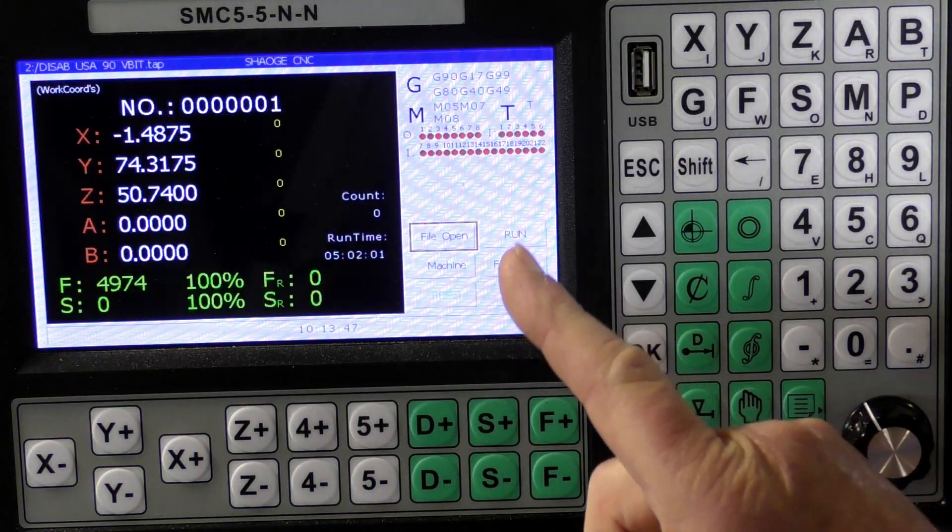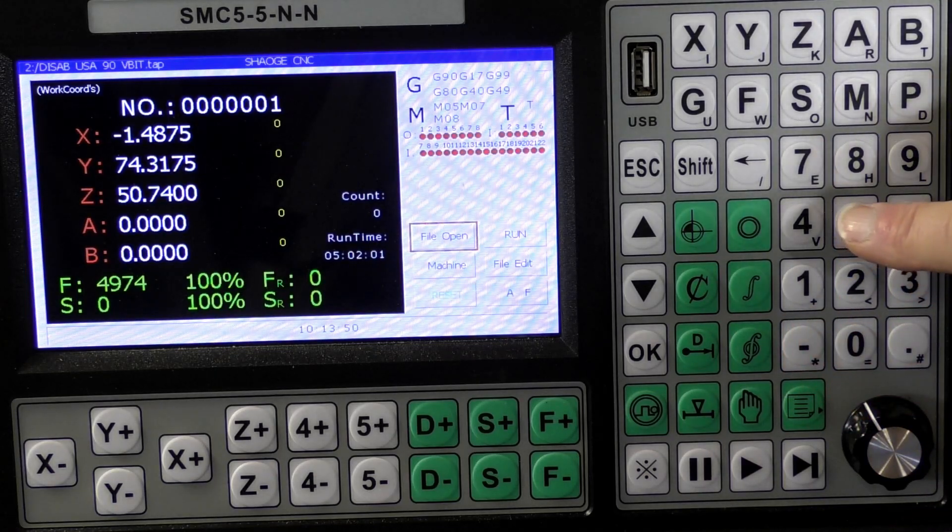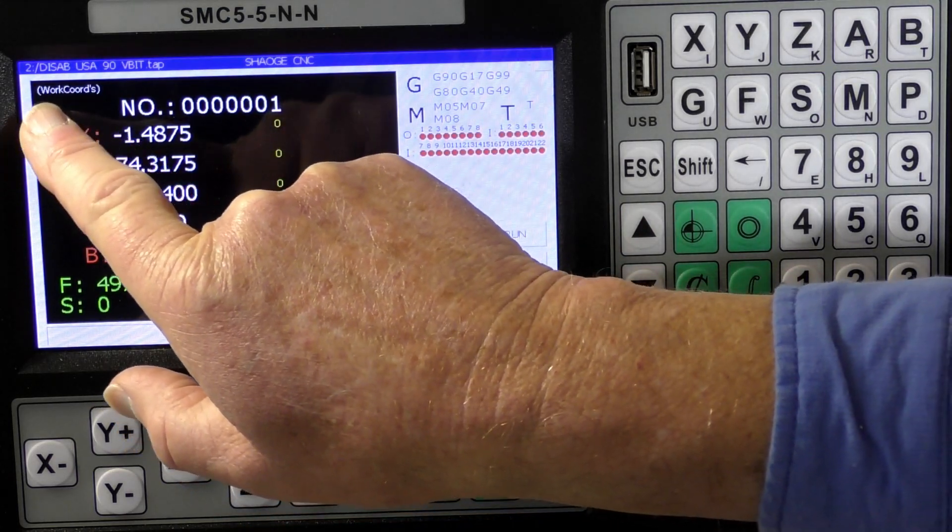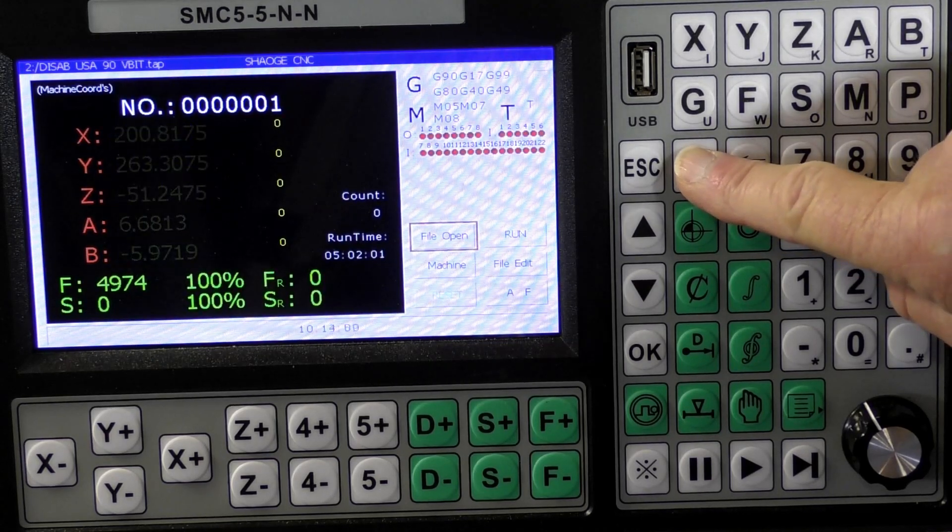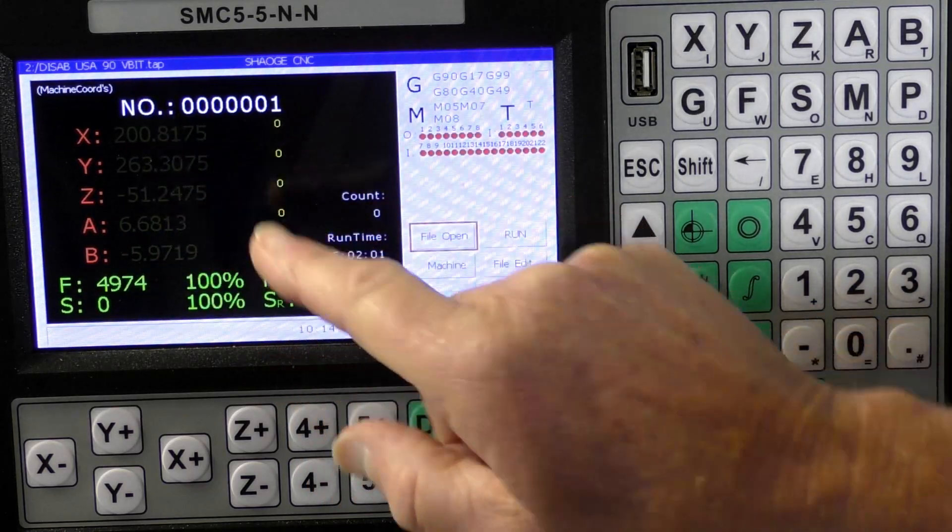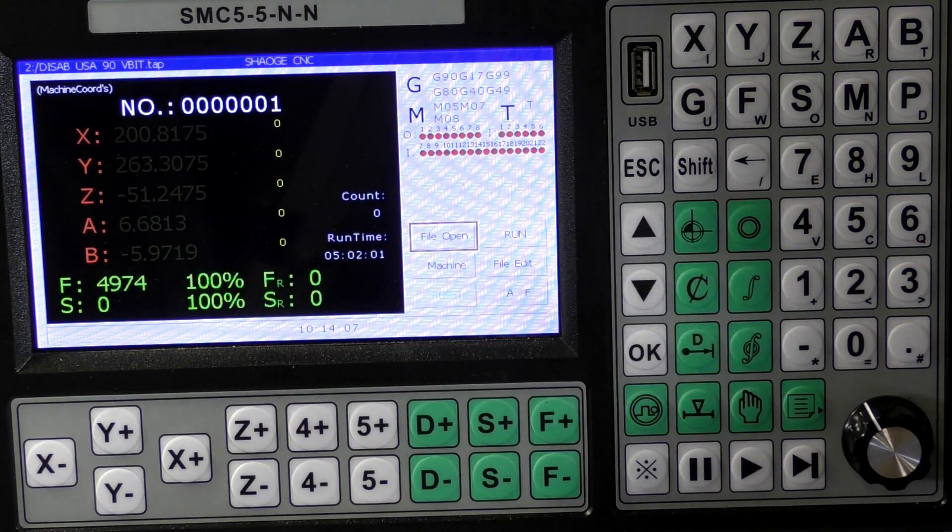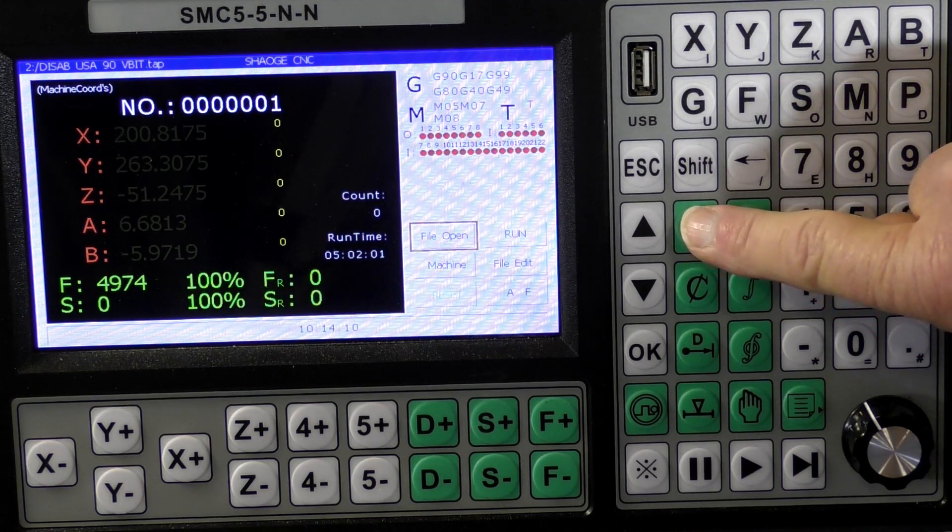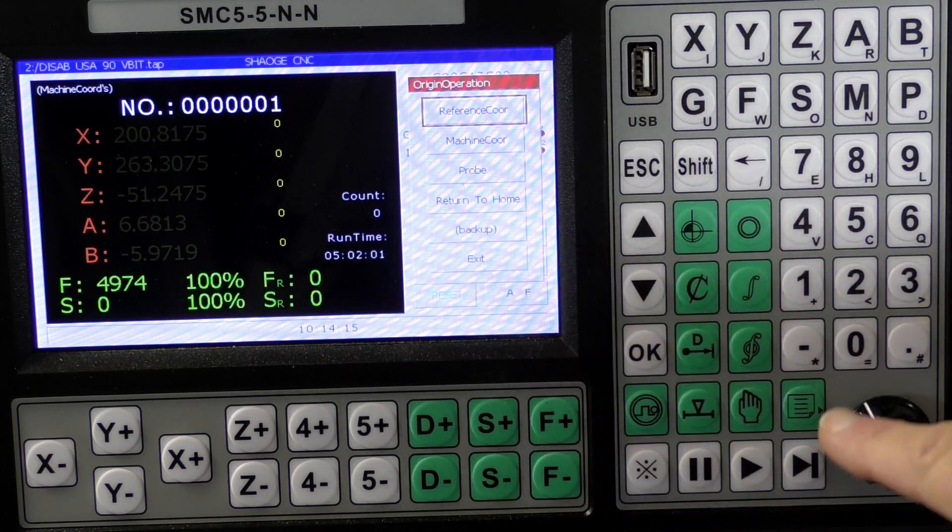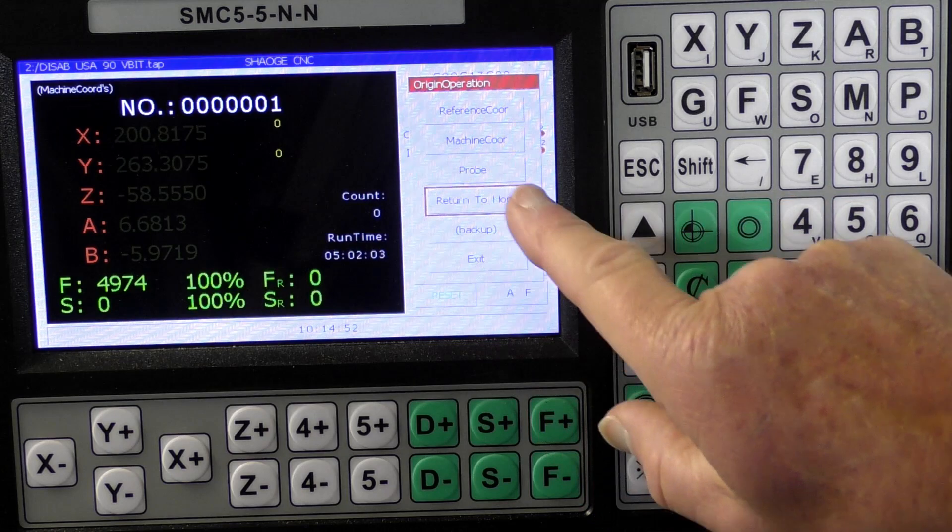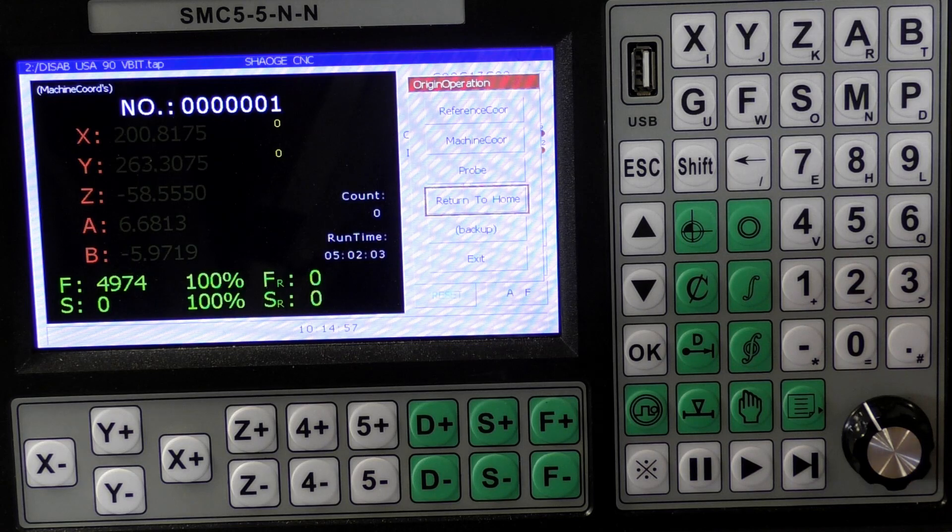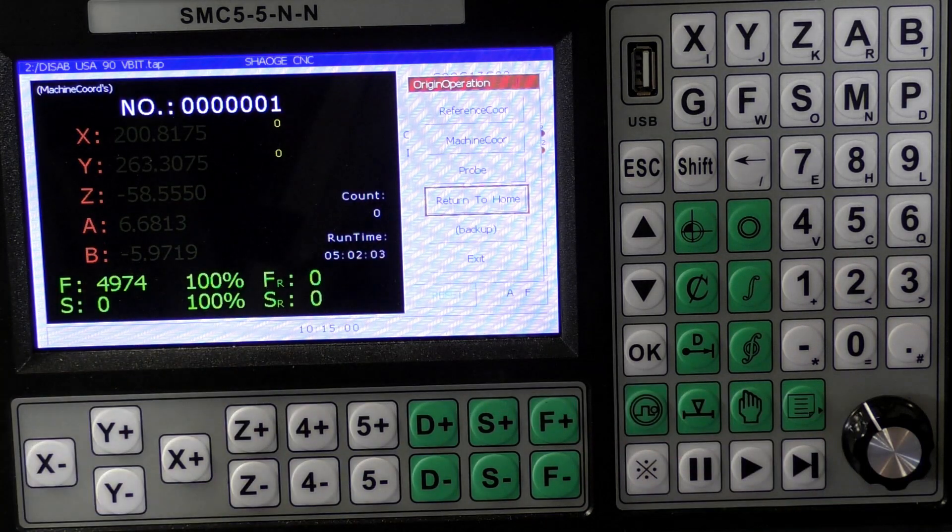First things first, you can see this reset flashing. Nothing will move at all until we take that off. To take that off, you come to this X with some dots, press that and it goes green. That means now this is live and talking to the little CNC router. The first thing we're going to do is home the machine. To do that, we need to first select the machine coordinates instead of work coordinates, and it's greyed out, telling us the machine hasn't homed yet.